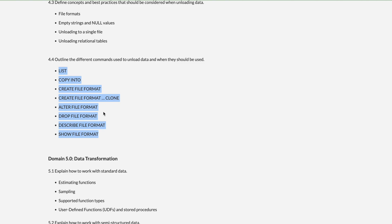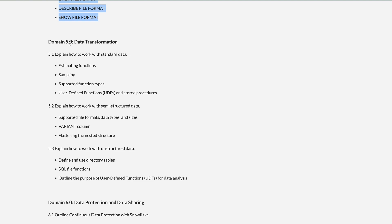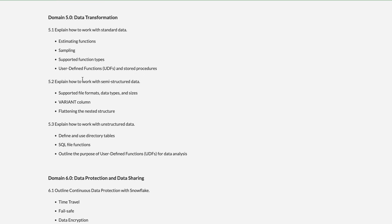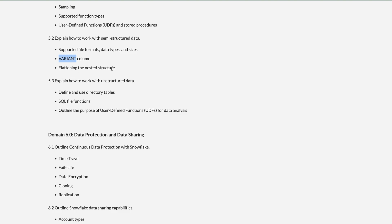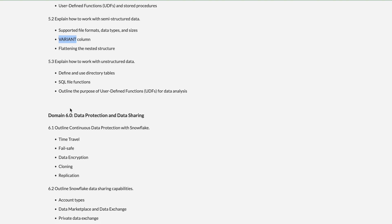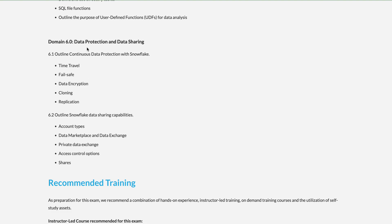Domain 5 — Data Transformation — includes estimation functions, sampling, supported function types, UDFs, and stored procedures. Stored procedures are a key method for transforming data: you take an input, apply the procedure, and load the result. Working with semi-structured data is also covered — JSON, XML, the VARIANT data type, and flattening and nesting of data. Snowflake has an out-of-the-box feature to directly load JSON files and query them as tables. Unstructured data handling is also included.